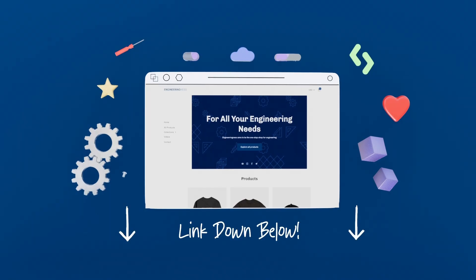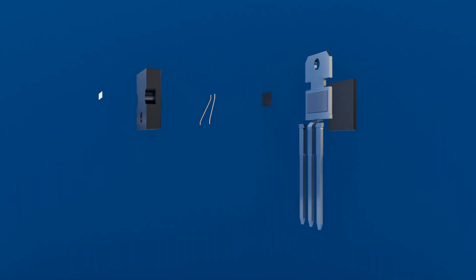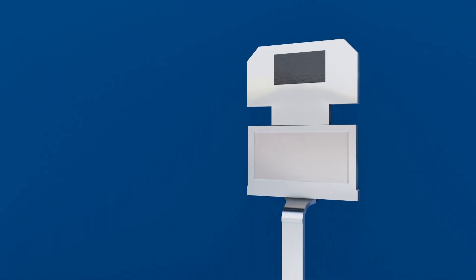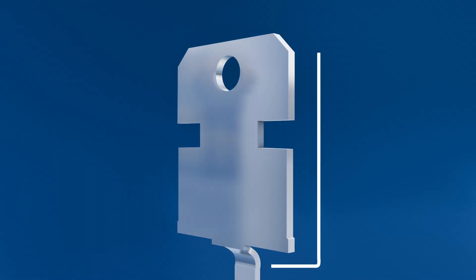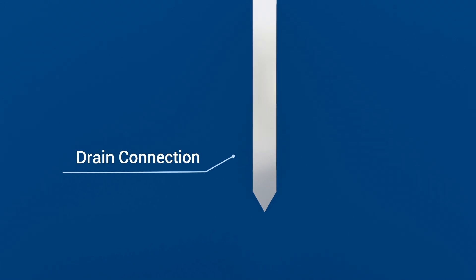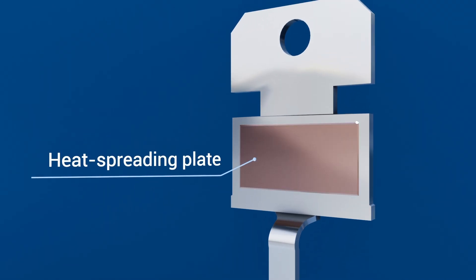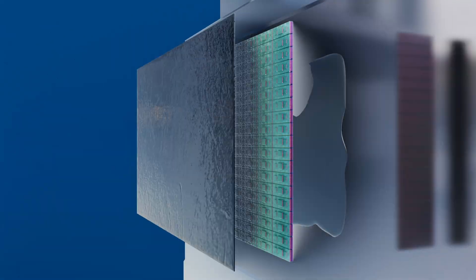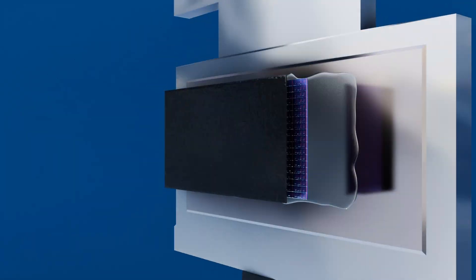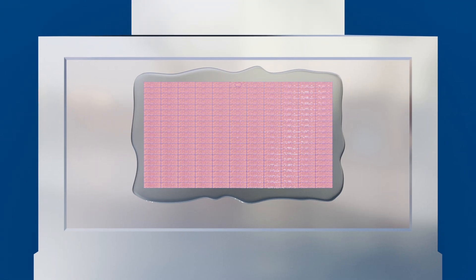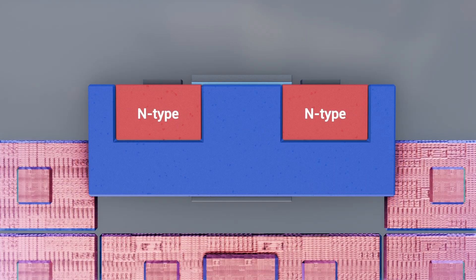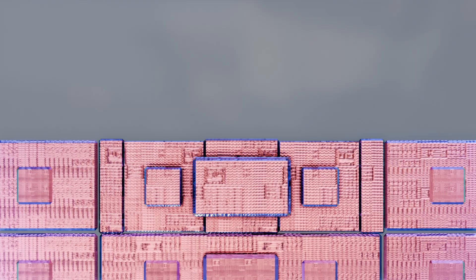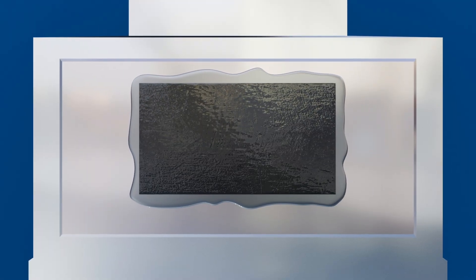The anatomy of a MOSFET: inside its black epoxy package, a power MOSFET is mounted on a copper lead frame that serves as the drain connection and a heat-spreading plate. On top of that copper plate sits the silicon die, whose underside is soldered directly to the drain. The die's top surface carries two heavily doped regions — the source and the body — which are electrically shorted together under a single metal pad, wire-bonded to the source pin.